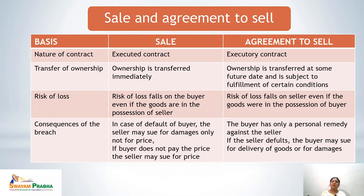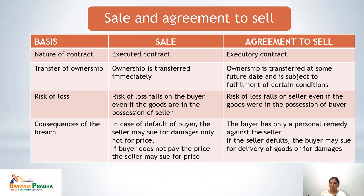On the basis of consequences of breach, in case of sale, if the buyer defaults, the seller may sue for damages only, not for price. But if the buyer does not pay the price after ownership has been transferred, the seller may sue for the price. In an agreement to sell, the buyer has only a personal remedy against the seller. If the seller defaults, the buyer may sue only for delivery of goods or for damages.